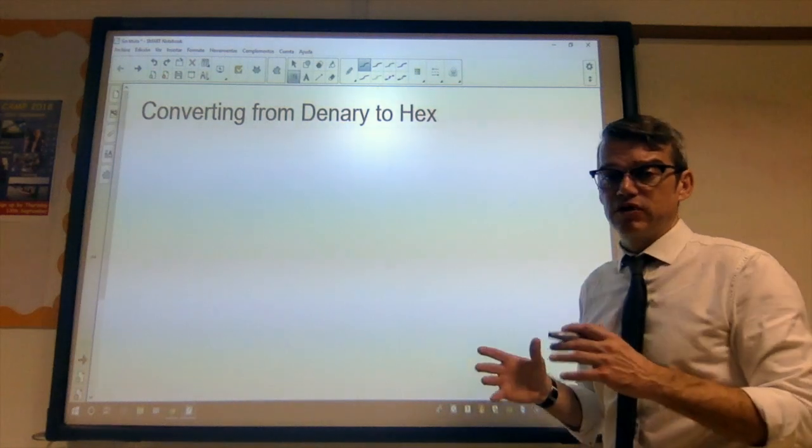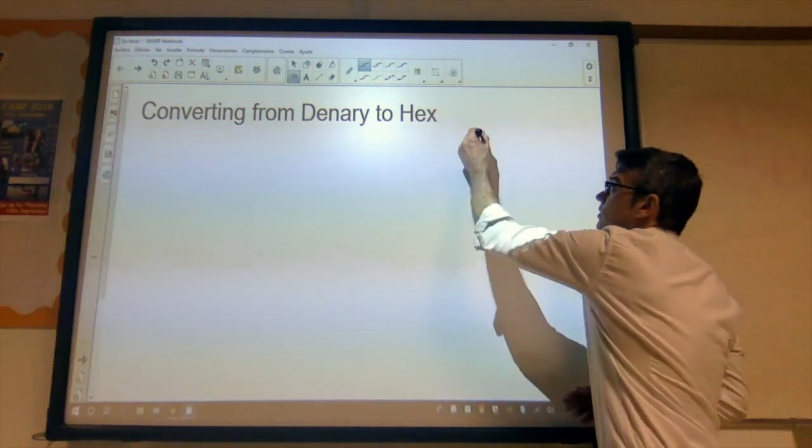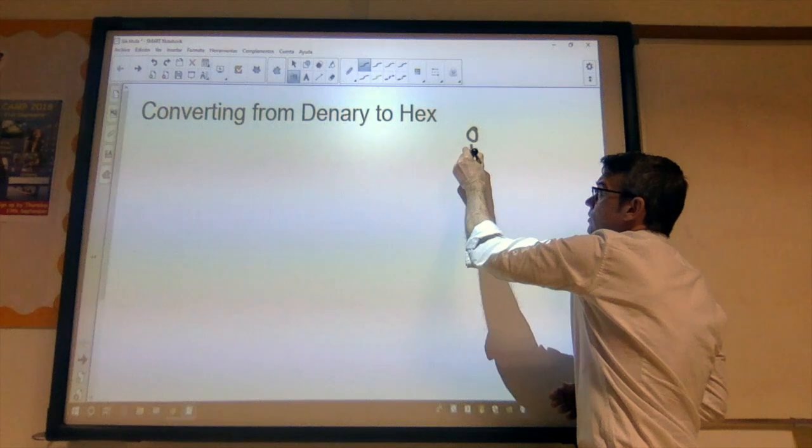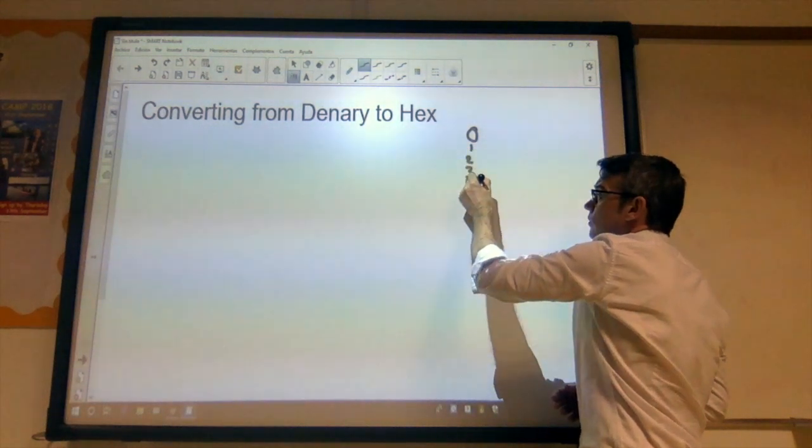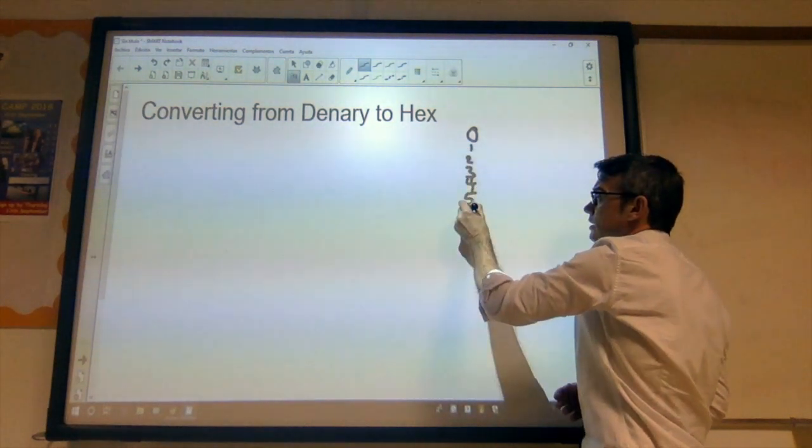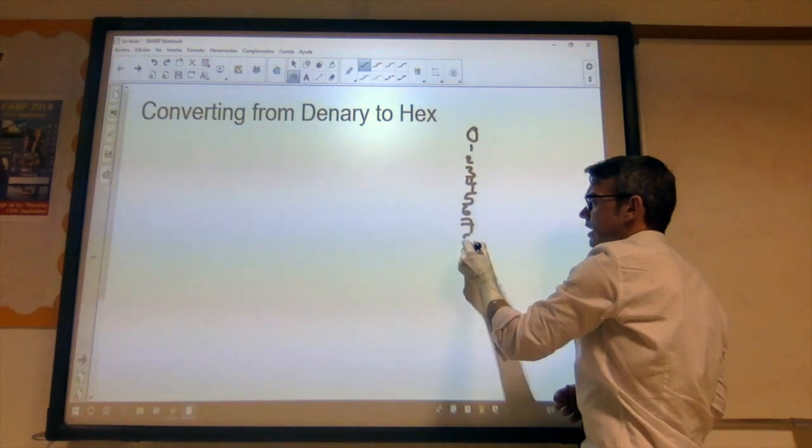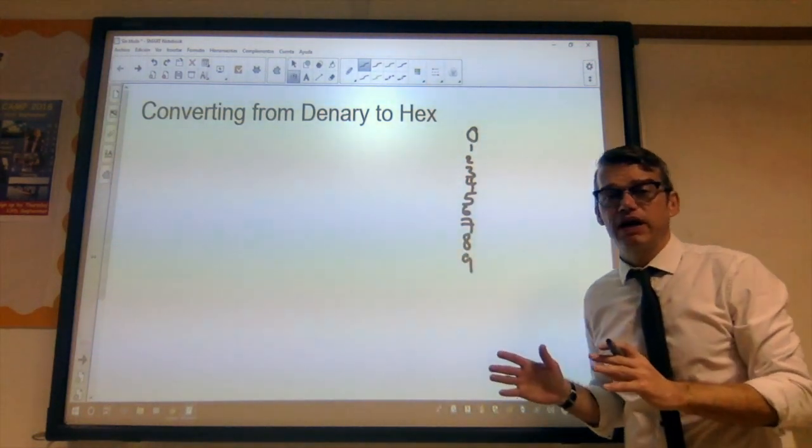Just like we've got 10 possible values for a decimal number for each column, each digit that makes up the number, and 2 possible values for our binary number system, in the hexadecimal number system we've got 16 possible values. So, we'll start by looking at those possible values that we can use. So, we start with 0, 1, 2, 3, 4, 5, 6, 7, 8 and 9. Those are the first 10 values.